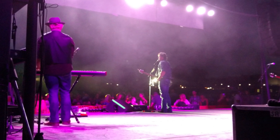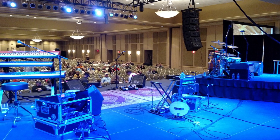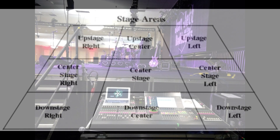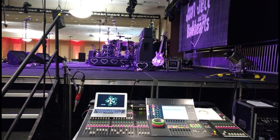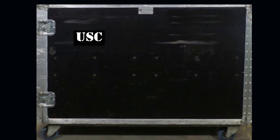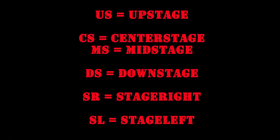Once you learn these terms, you can combine them to indicate more specific areas of the stage — terms like downstage center, downstage right, downstage left, upstage center, upstage right, center stage right, and so on. You can also start to understand the abbreviations used as shorthand. They're used to mark cases, amps, and set pieces to indicate their placement on stage. For example: US is upstage, CS is center stage, DS is downstage.